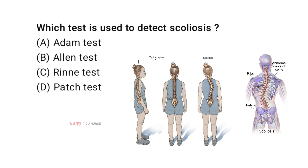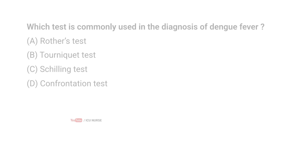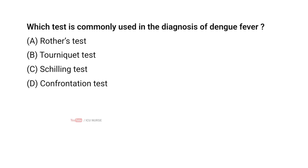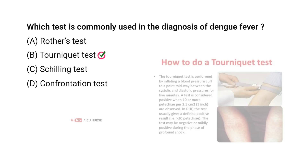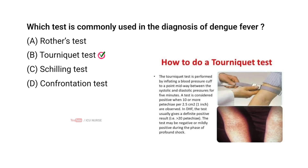Which test is used to detect scoliosis? Correct answer A: Adam test. Which test is commonly used in the diagnosis of dengue fever? Correct answer B: Tourniquet test.